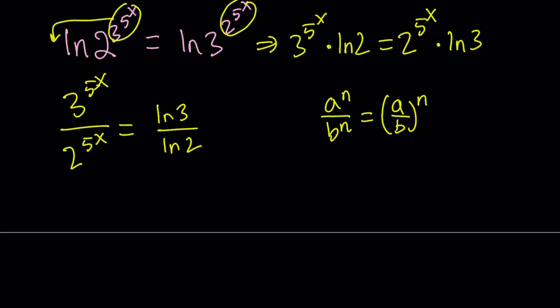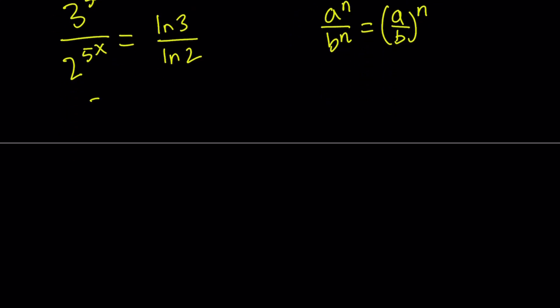So now, since they have the same exponents, we can write this as 3 over 2 to the power 5 to the power x equals ln 3 over ln 2. Great.